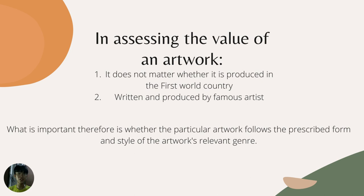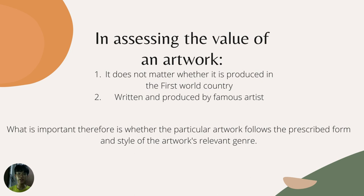For example — and I'm a Swiftie, so bear with me — Taylor Swift made an album called 1989, which has an 80s pop vibe. She was able to make every track on the album have that consistent 80s pop vibe. Therefore, her artwork was recognized by Grammy experts — well known for their knowledge in music — and that's why 1989 deserved Album of the Year at the 2015 Grammys. What is important is whether the particular artwork follows the prescribed form and style of its relevant genre.